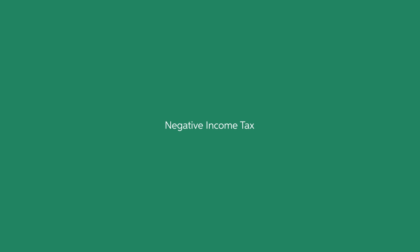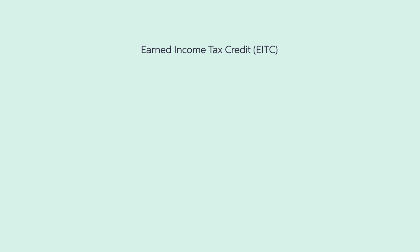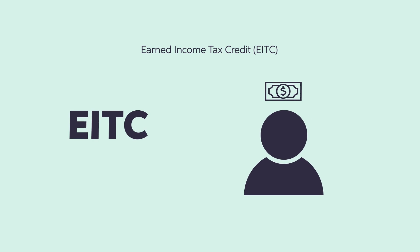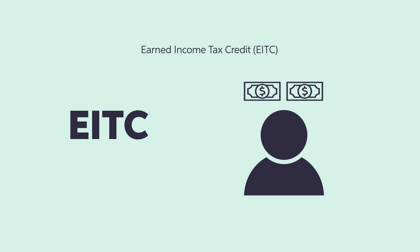Another type of income redistribution is called a negative income tax. The negative income tax system is not a need-based system; rather, the only qualification is earning a low income. This creates incentive problems, as people who are too lazy to work may also take advantage of the system. The federal government has the Earned Income Tax Credit (EITC), which gives working households larger tax refunds. Enacted in 1975, the EITC benefits eligible working families and helps reduce poverty by supplementing wages to low-paid workers. Since only working households are eligible, it mitigates the incentive problem.